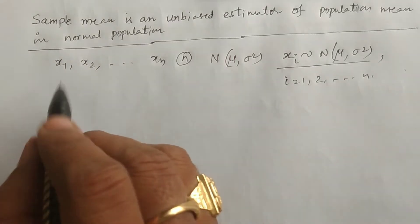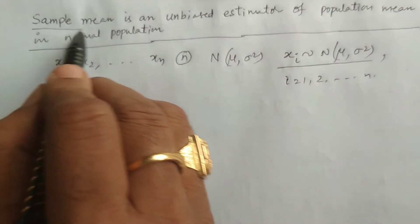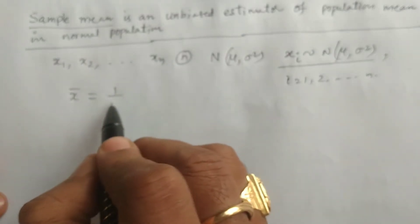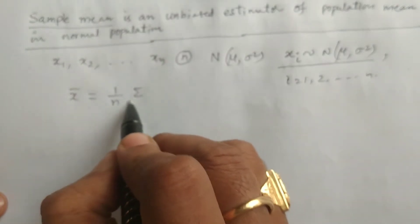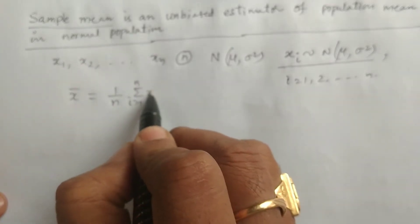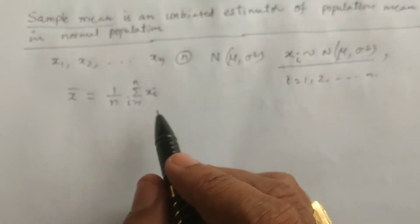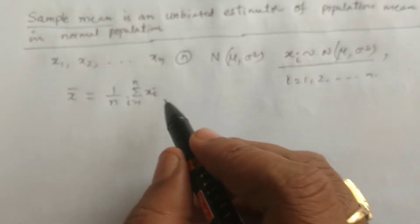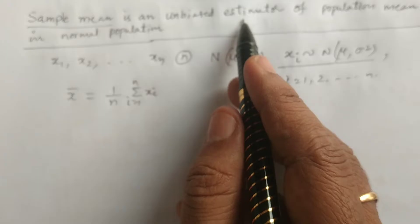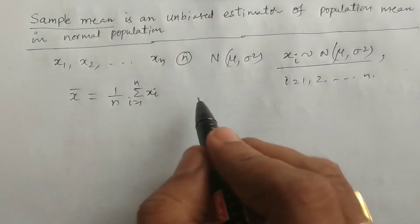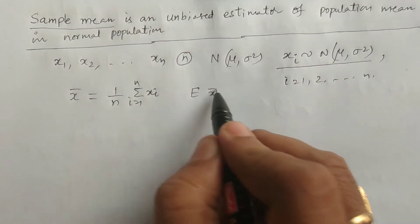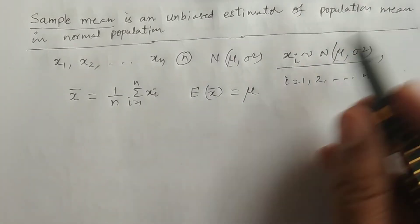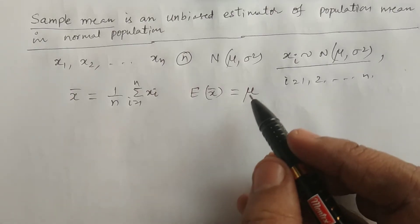Now if we want to prove that the sample mean is an unbiased estimator, we consider the sample mean x bar, which is equal to 1 by n summation i equals 1 to n of xi. This is the formula for the sample mean x bar. We have to prove it is an unbiased estimator, meaning we must show that expectation of x bar is equal to mu.